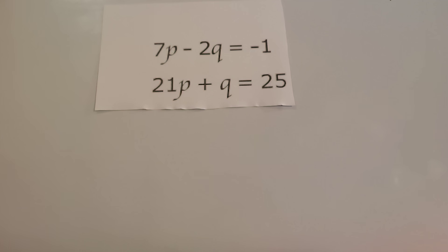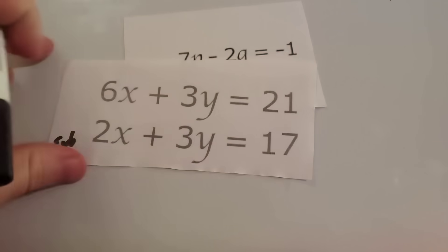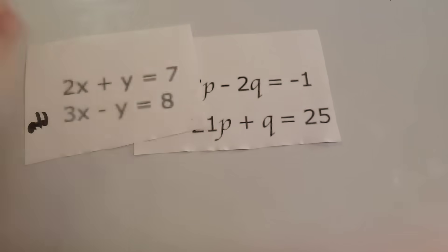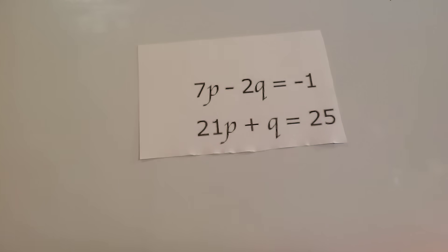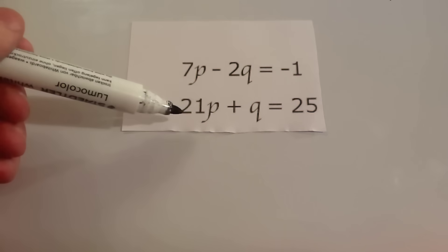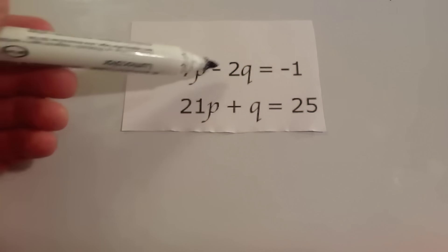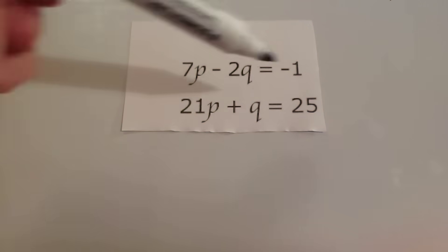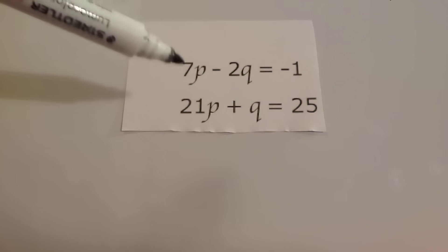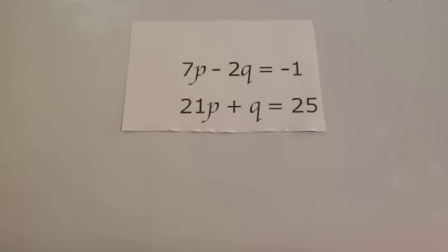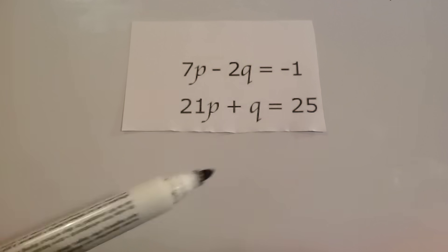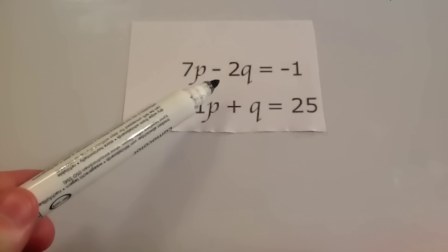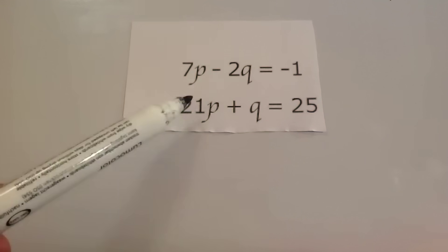This next pair is a bit more tricky. In the previous examples we had matching coefficients like 3y and 3y, or 4x and 4x, which were easy to eliminate. But here we've got 7p and 21p, and minus 2q and q — you can't directly add or subtract those to get zero. What I'd do is double the bottom equation: doubling gives 2q, and minus 2q plus 2q gives zero. So double the bottom one and add the equations.